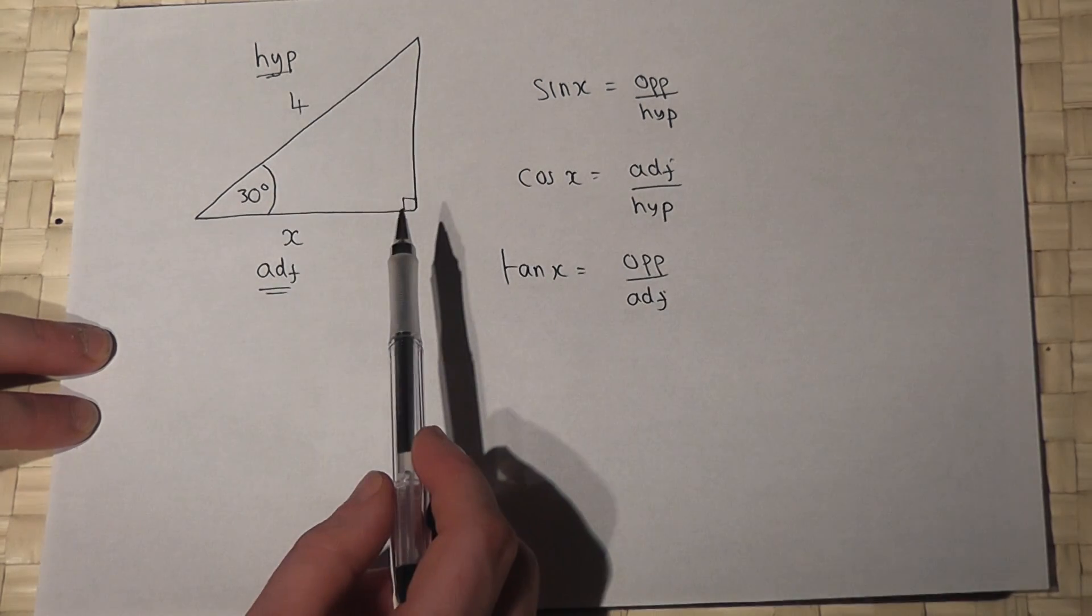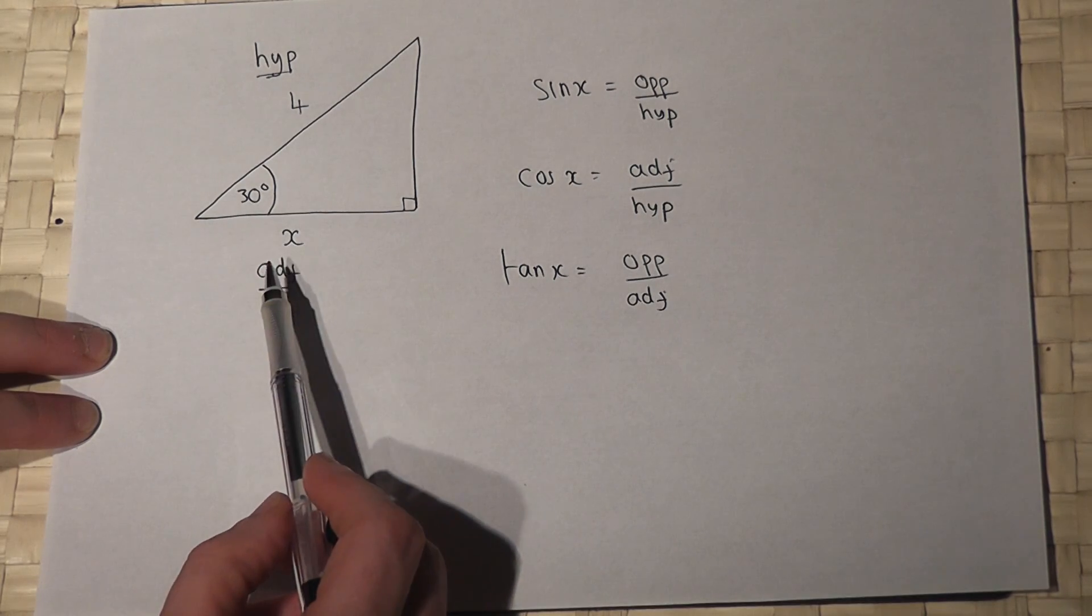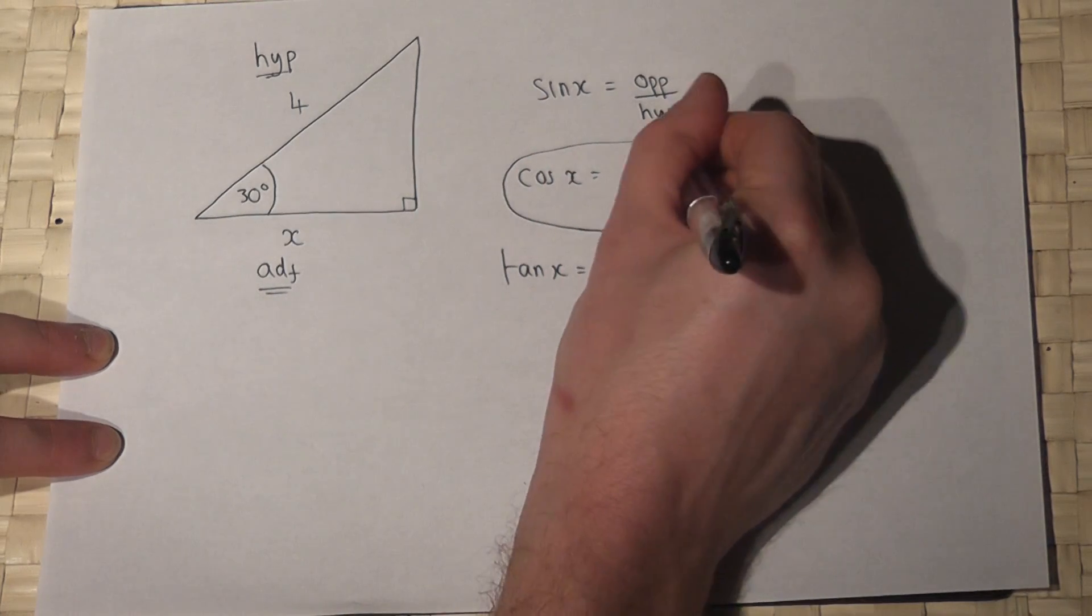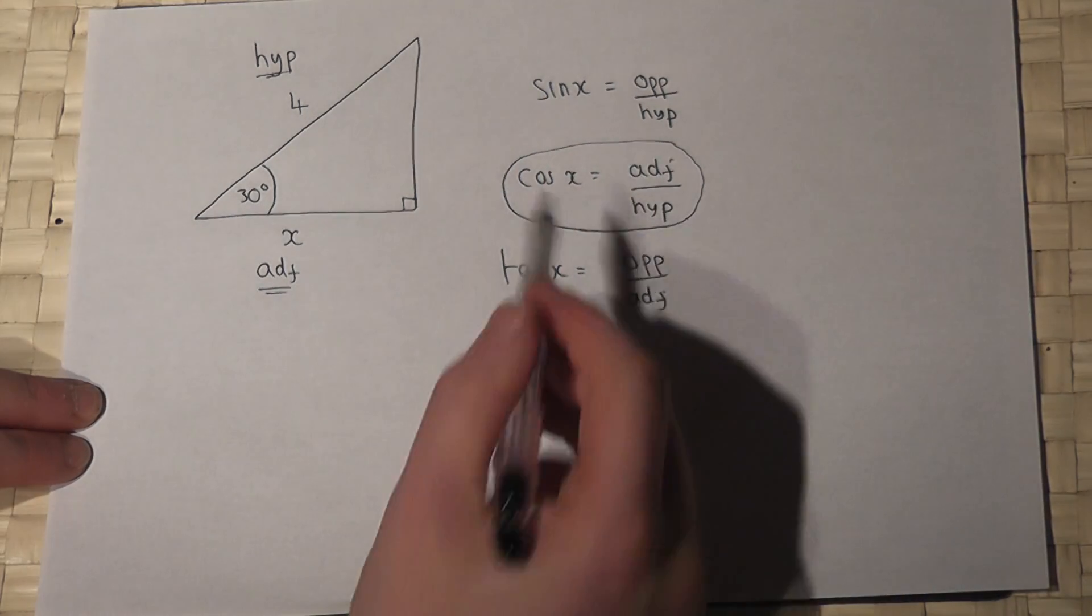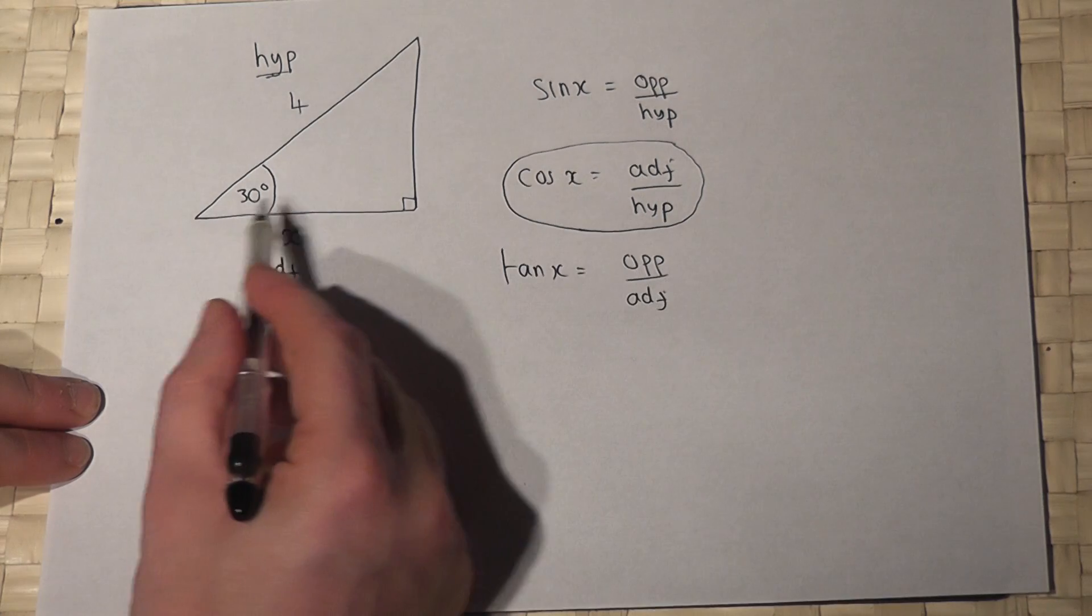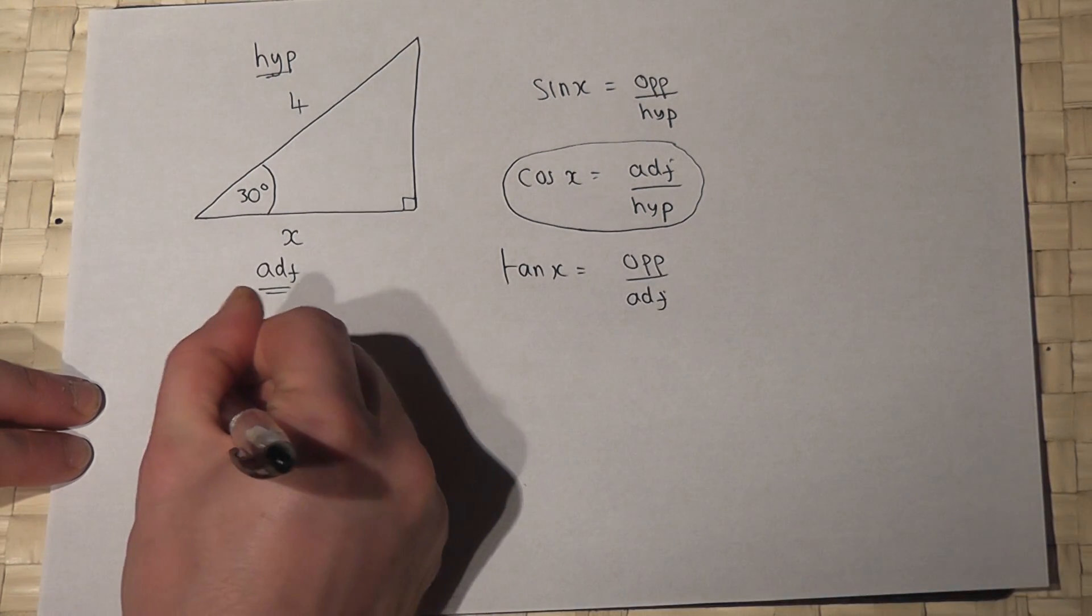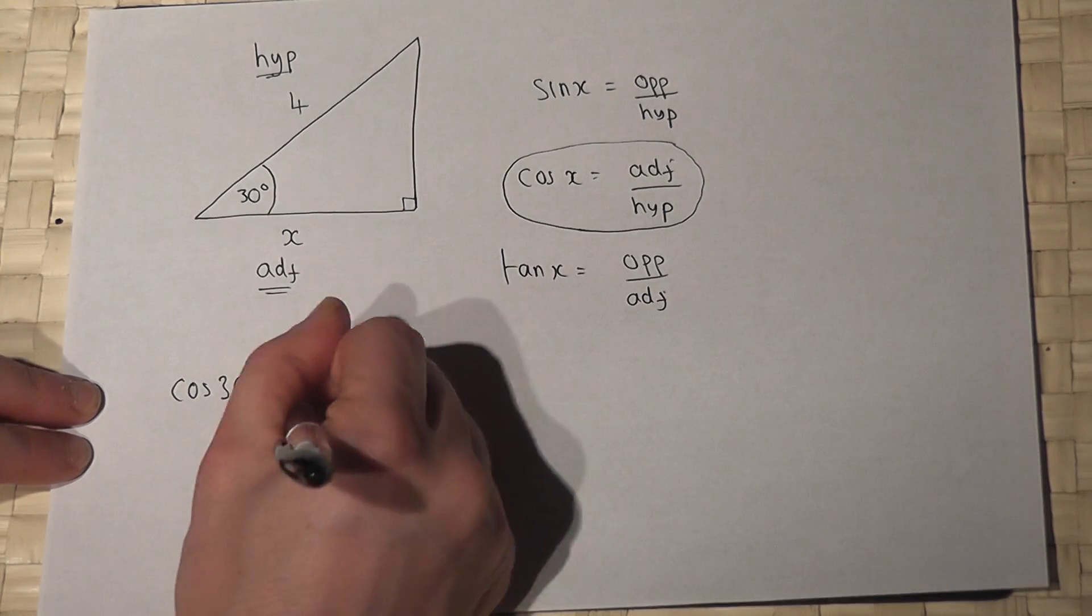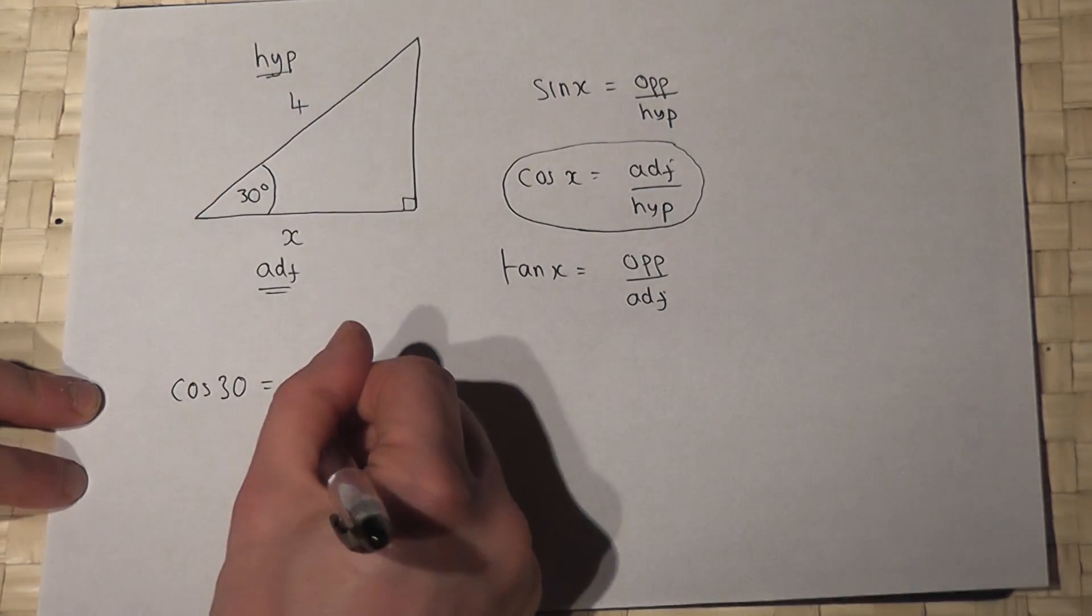We know the hypotenuse and I want the adjacent, so A and H involves that equation here. Now being careful, cos of the angle, so cos of 30 equals the adjacent which is x divided by the hypotenuse which is 4.